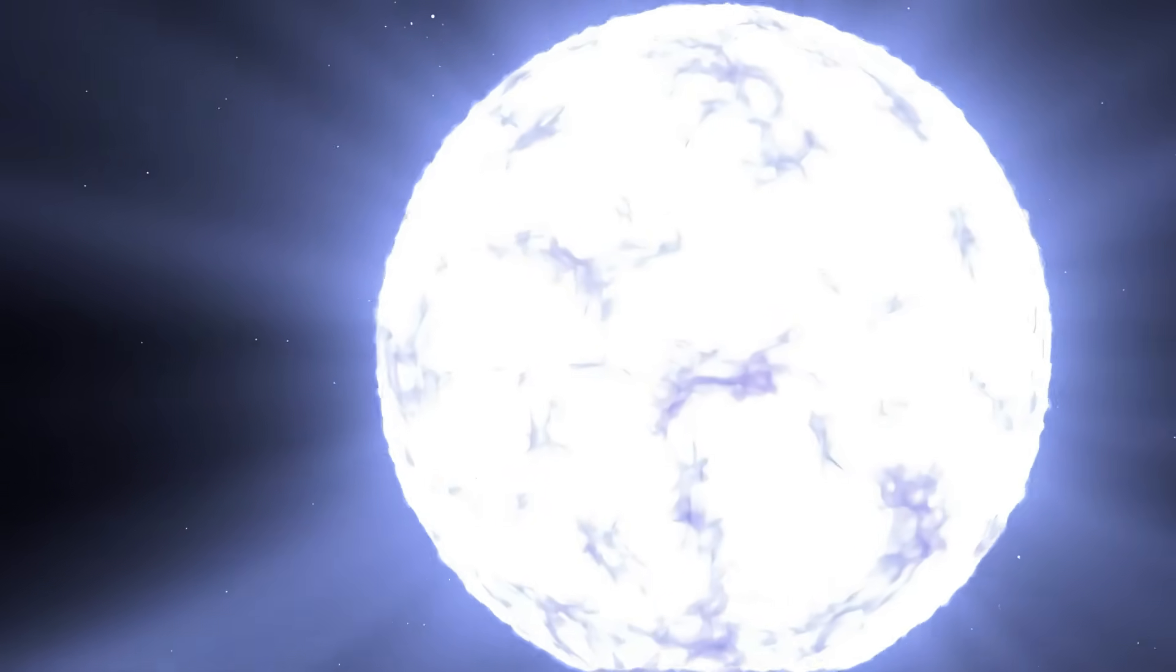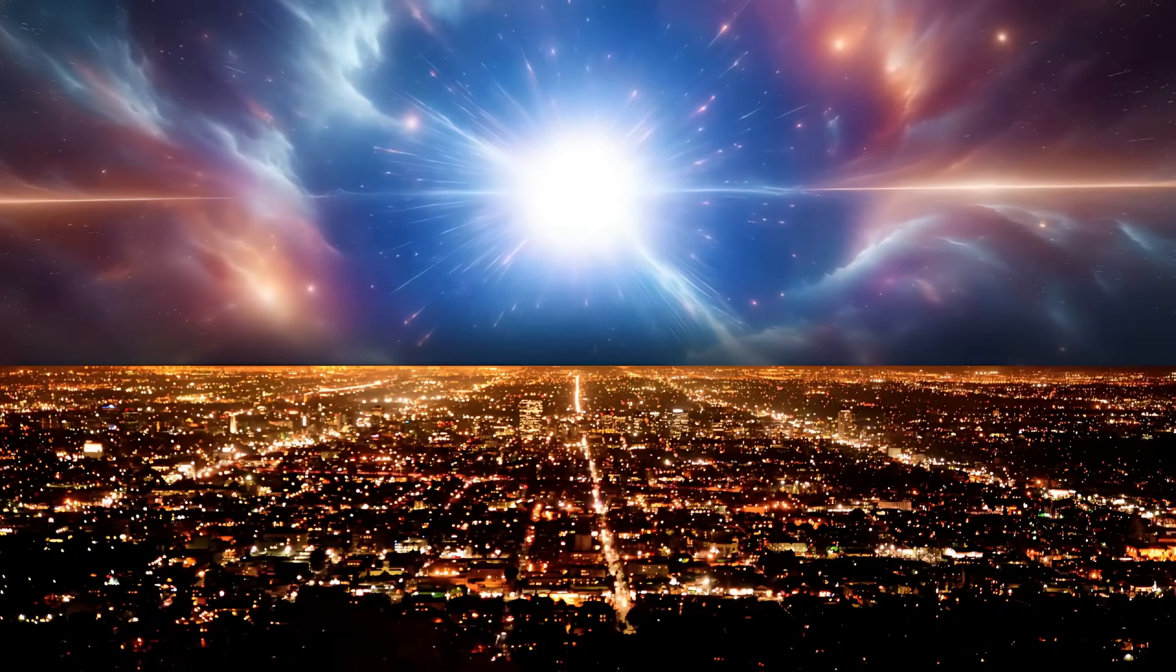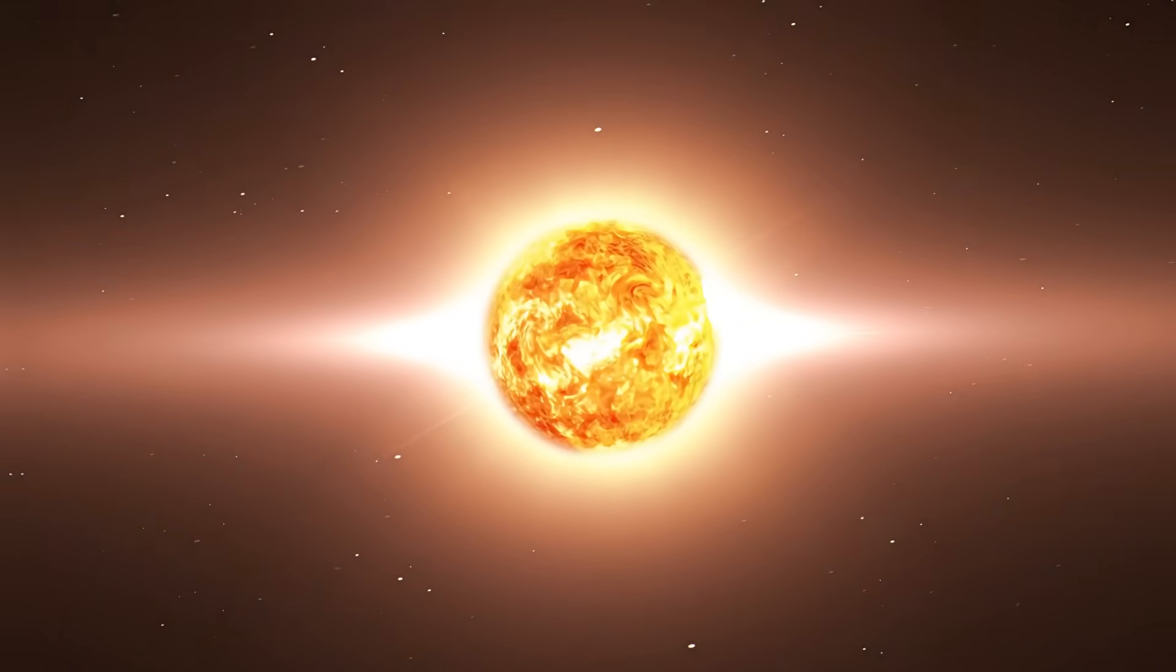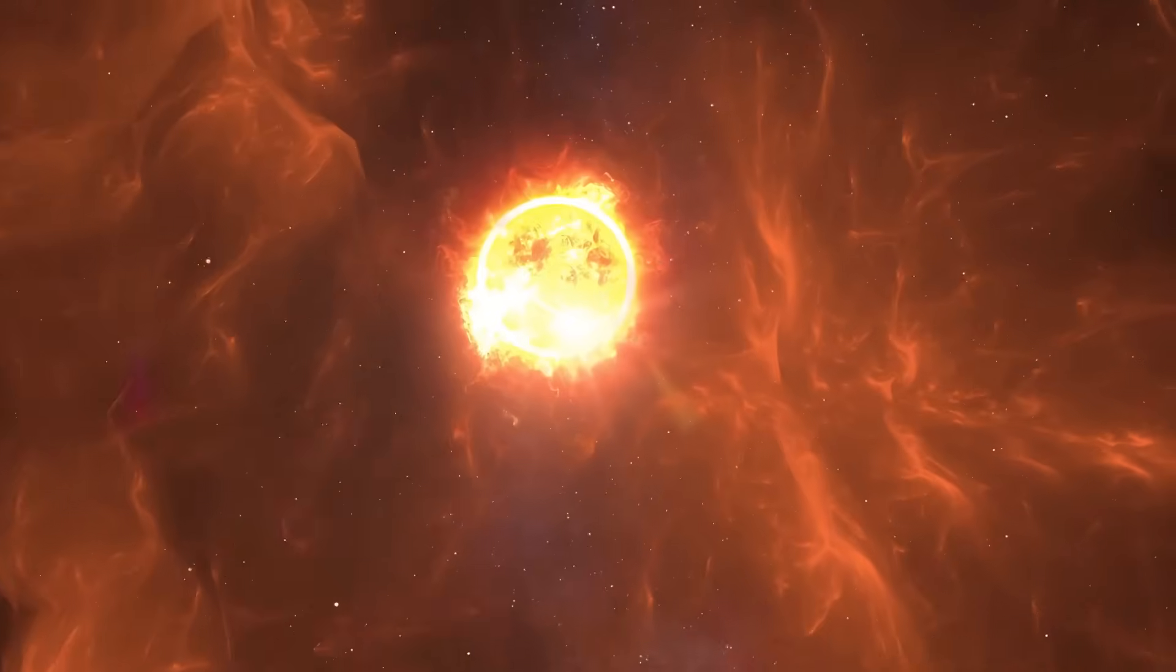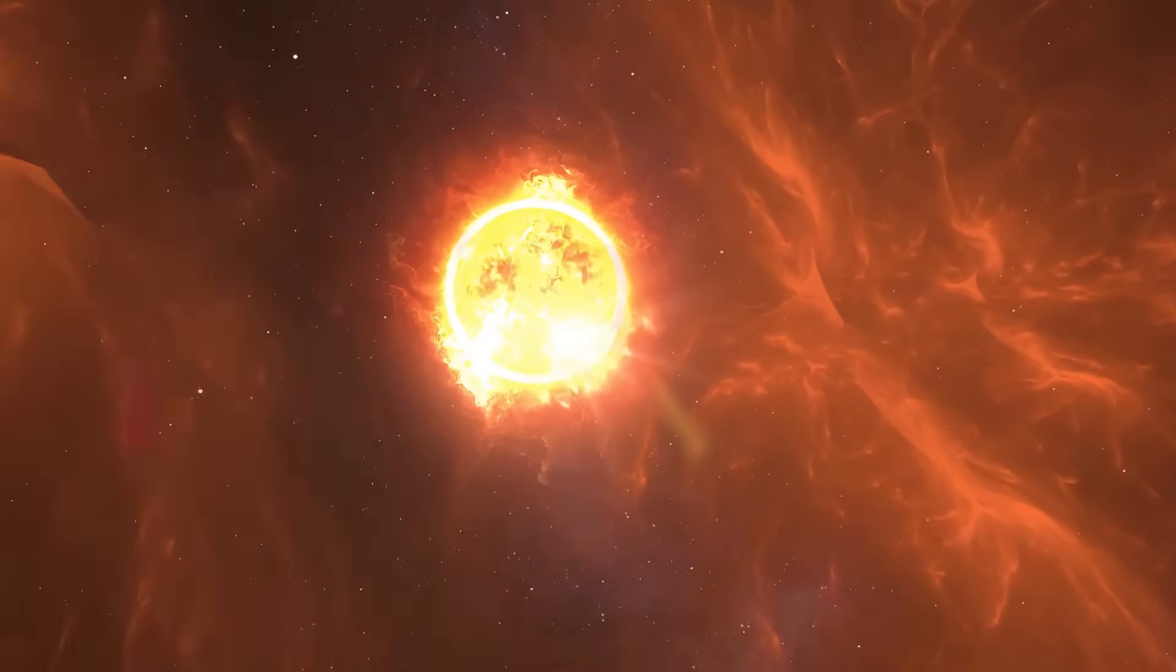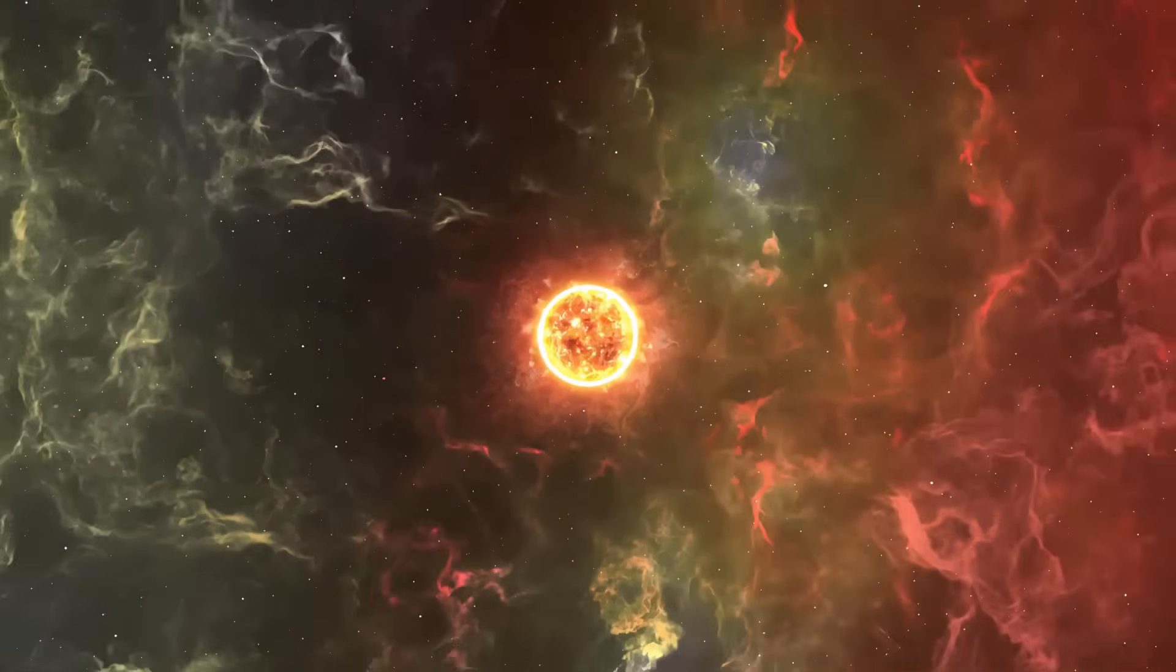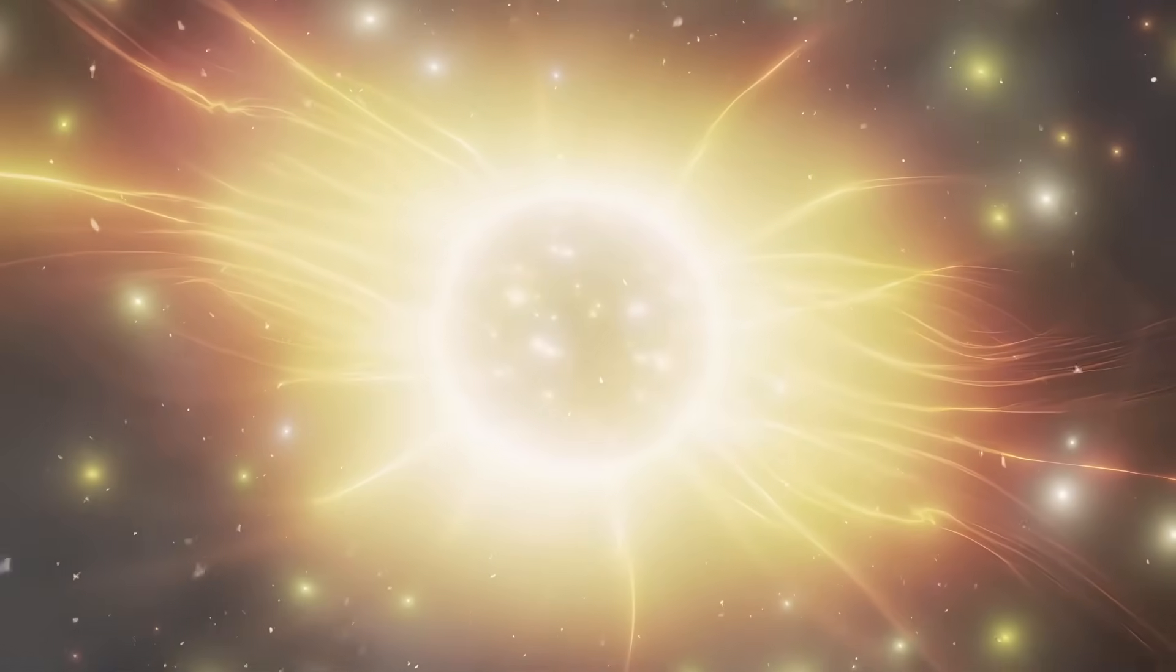For comparison, if a nearby star like Alpha Centauri, just over 4 light years away, were to go supernova, it would shine as bright as the Moon and expose Earth to dangerous radiation. But Alpha Centauri is not massive enough to become a supernova. While there are other visible red giants that could potentially go supernova, Betelgeuse is currently the most intriguing. And that is why its recent activity has raised concerns among scientists.